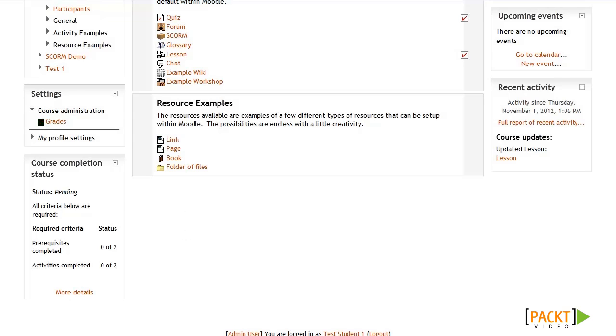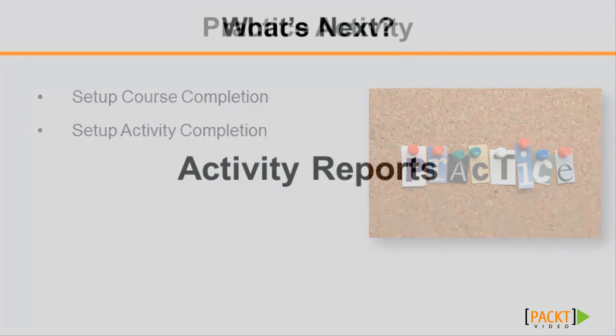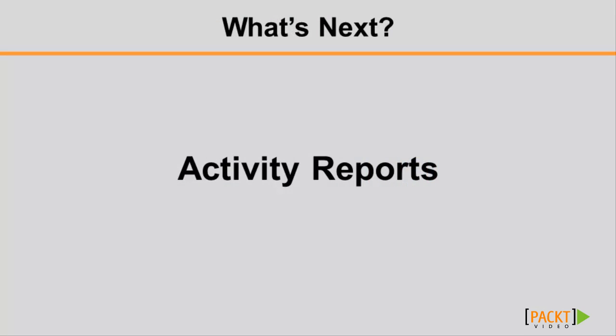And that's it for setting up Course Completion. Time for a little practice. Go ahead and set up the Course Completion feature for your course, or a series of courses if you're working on some kind of a certification program. Also make sure to configure the activity completion conditions for different types of activities so you can get a better feel for how course completion works. In this video you learned how you and your students can evaluate their progress towards completion with the course completion feature. In the next section we'll talk about how to see even more details about students' participation with activity reports. That's it for now and we'll see you in the next video.